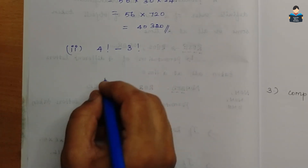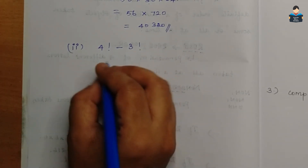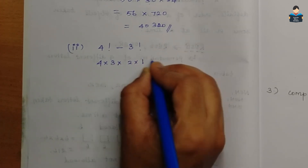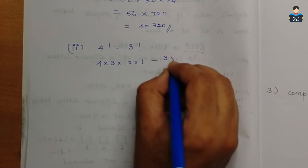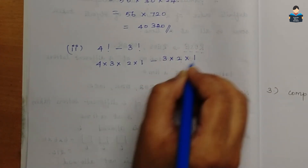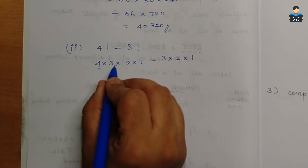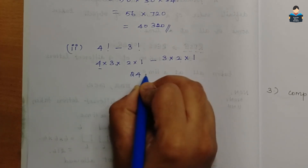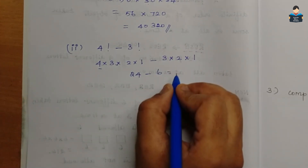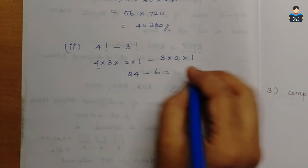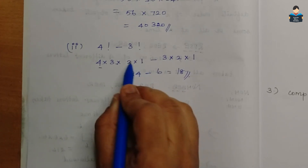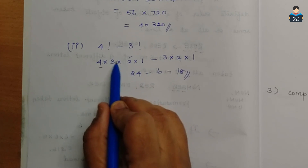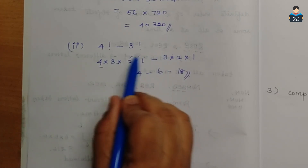Next subdivision: 4 factorial minus 3 factorial. 4 factorial is 4 into 3 into 2 into 1, and 3 factorial is 3 into 2 into 1. Multiplying: 4 × 3 × 2 × 1 = 24, and 3 × 2 × 1 = 6. So 24 minus 6 equals 18. Write only the values, don't expand 3, 2, 1 unnecessarily.